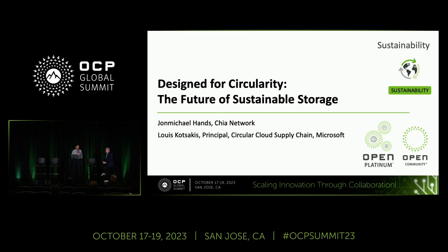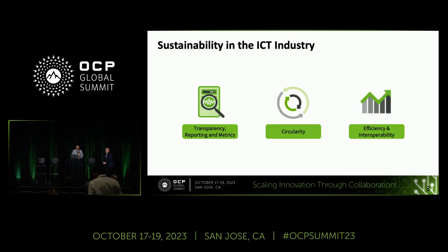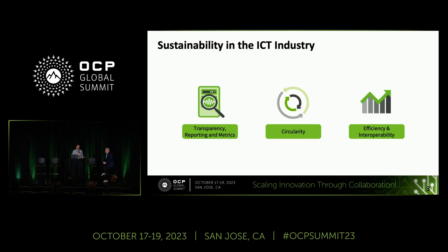We're going to do a little two-part. I'm going to talk through circularity — what OCP Sustainability is doing around circularity and what we've done in the last two years through the various white papers. We recently released a white paper that talks about what sustainability actually means in the ICT industry. Even at conferences like this, I see folks getting efficiency and sustainability mixed up. Efficiency is one important part of sustainability, but it is not the only sustainability strategy. We broke the white paper into three main sections: transparency reporting and metrics for data center operators, product circularity for device vendors and manufacturers, and efficiency and interoperability.